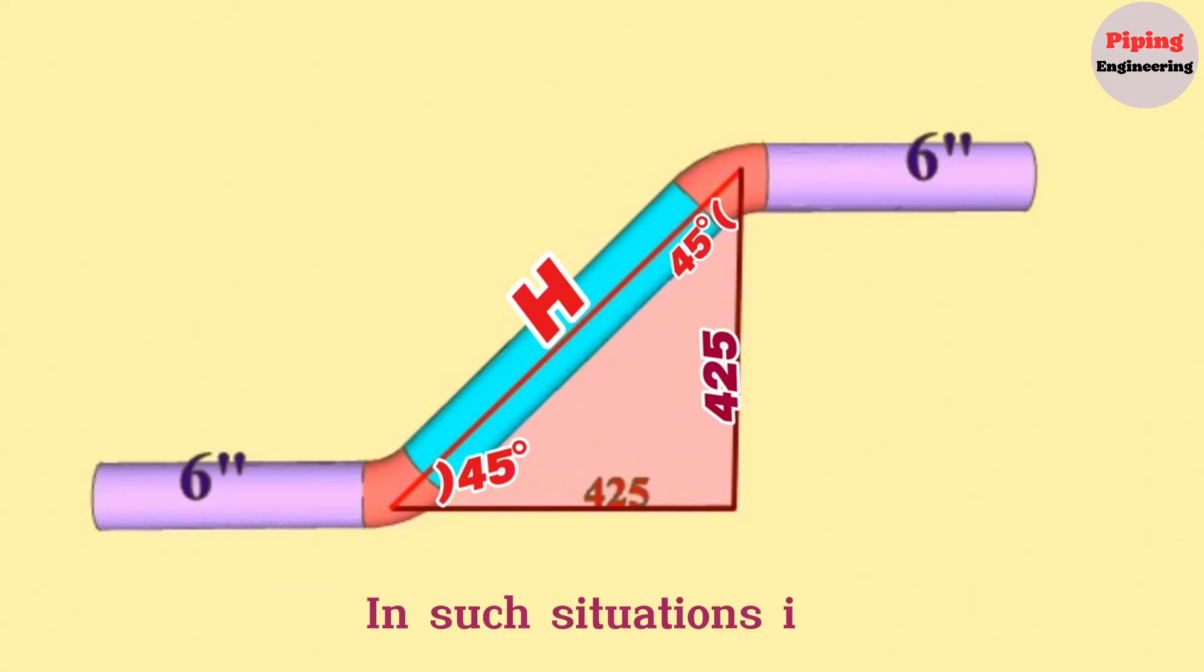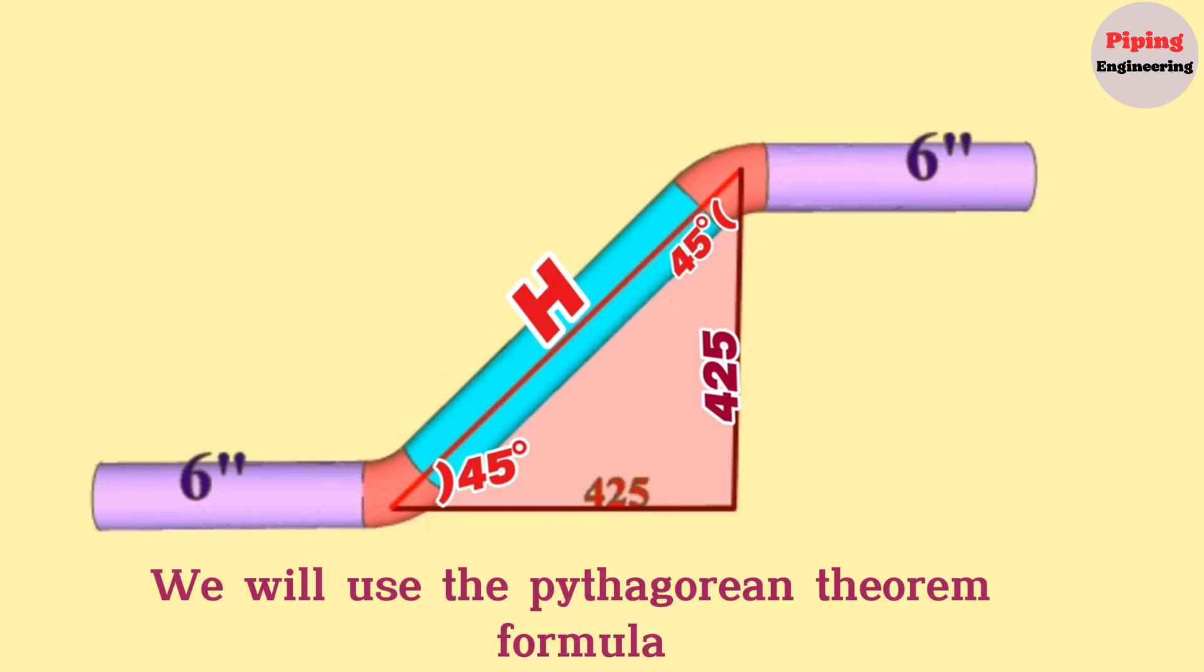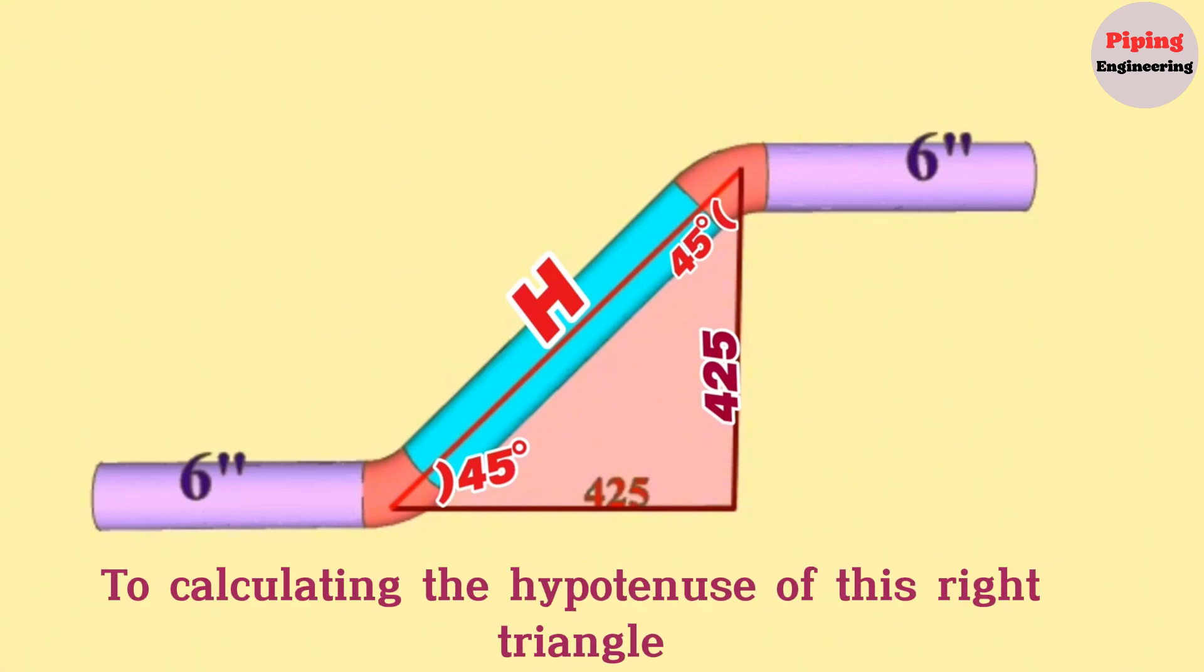In such situations—that is, the length of the hypotenuse of an equilateral right triangle—can be calculated in two easy ways. We will use the Pythagorean theorem formula in such cases to calculate the hypotenuse of this right triangle.